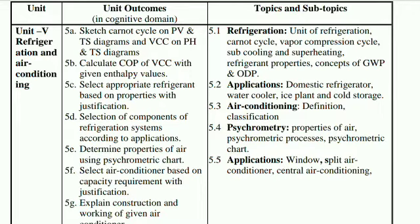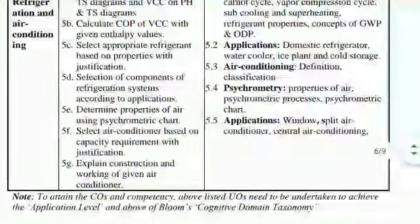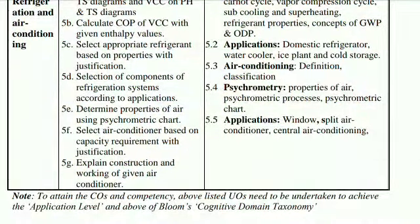The second point covers applications: domestic refrigerator, water cooler, ice plant, and cold storage. The third point is air conditioning: its definition and classification. The fourth point is psychrometry: properties of air, psychrometric processes, and psychrometric chart. The fifth point covers applications: window air conditioning, split air conditioners, and central air conditioning.